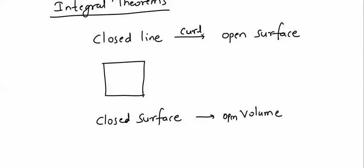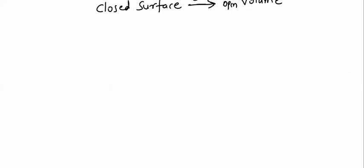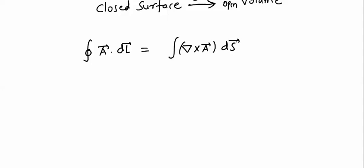So, a closed line will give me an open surface, and a closed surface will give me an open volume. Whenever I consider a closed line to open surface, this can be done using the curl operation. This is nothing but Stokes theorem. In mathematical terms: the closed line integral ∮A·dl equals the open surface integral of (∇×A)·dS.